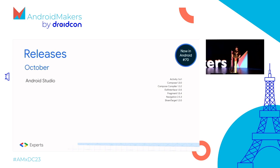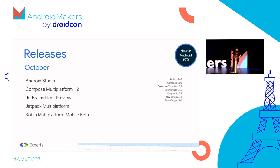Releases included Now in Android episode 70, lots of AndroidX releases, Compose 1.3, Android Studio Dolphin Patch 1 for general fixes, Electric Eel Beta 4, Flamingo Canary 6, Material Design components for Compose Multiplatform 1.2, and JetBrains Fleet Preview — similar to VS Code but with JetBrains niceties, running the IntelliSense engine as a separate thread process so you can enable or disable it as needed.